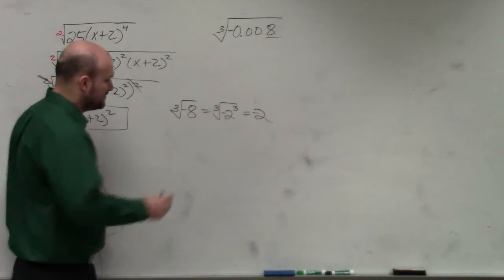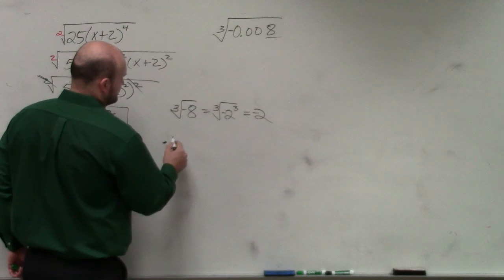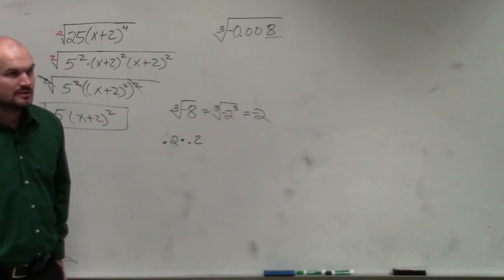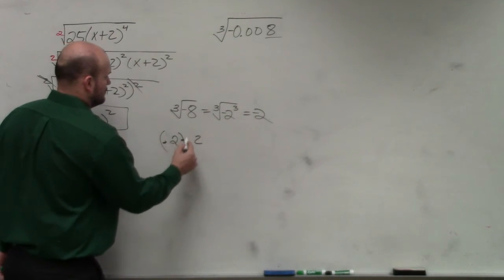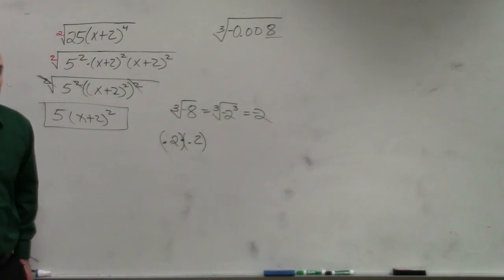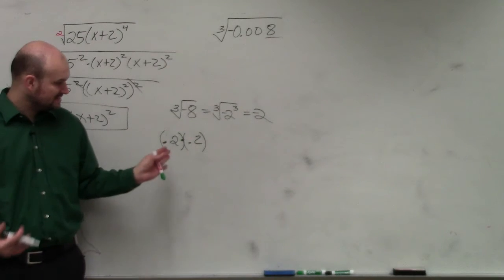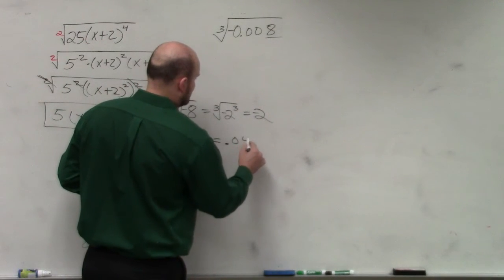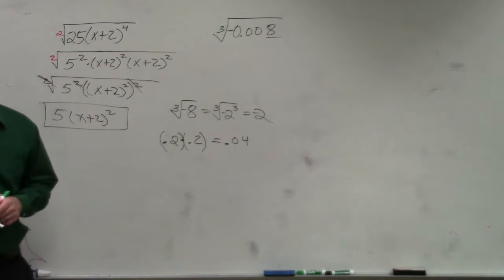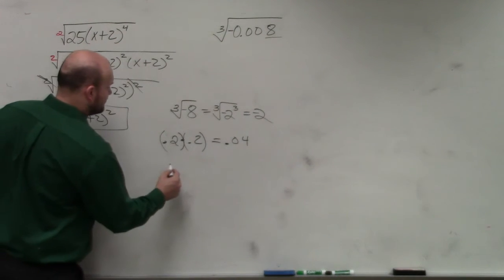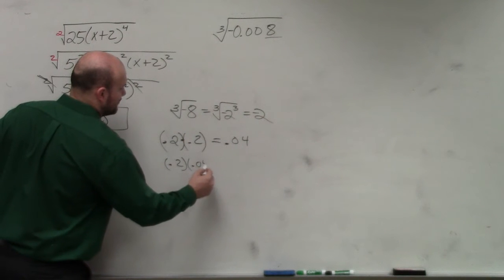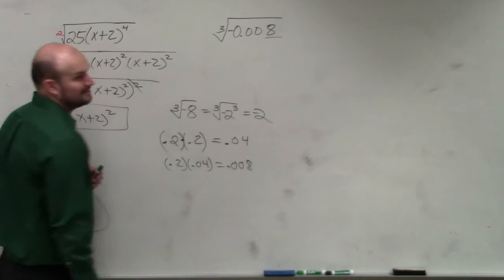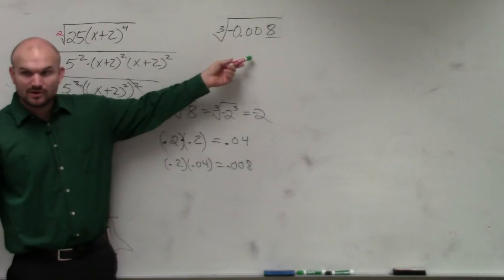So there's a couple things for us to understand. First of all, 0.2 times 0.2. If you were to multiply 0.2 times 0.2, our decimal places move over to 0.04. And if you were to multiply 0.2 times 0.04, that would give you 0.008. So it works.